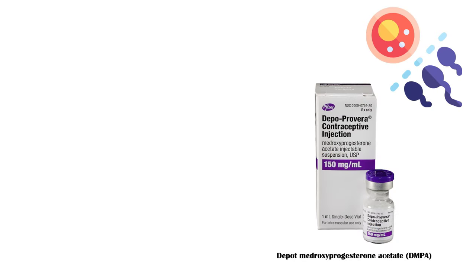Depo-medroxyprogesterone acetate, or DMPA, commonly known as Depo-Provera, is an injectable hormonal contraceptive method to prevent pregnancy.